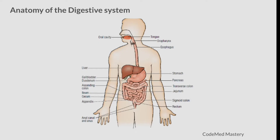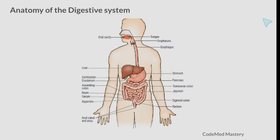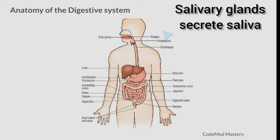The digestive system begins on page number 338 in your CPT manual. The feeding tube begins in the mouth and ends at the anus. The major function of the digestive system is to digest and break down foods taken into the body. Food enters via the mouth; the teeth and tongue mechanically break food into small particles. Then the salivary glands secrete saliva, which aids in early phases of chemical digestion.